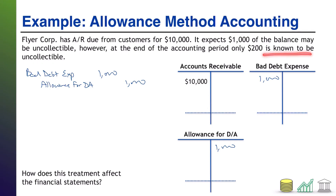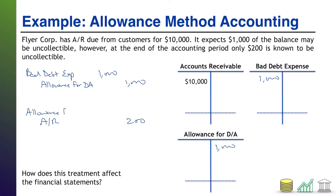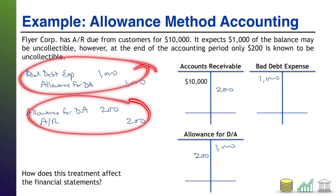Once something is known to be uncollectible, that's when we write it off. We get rid of the AR — credit accounts receivable $200 — since we won't have that account anymore. We also debit allowance for doubtful accounts $200, since it's no longer an estimate. Updating the ledgers: AR goes down $200 and allowance also goes down $200.